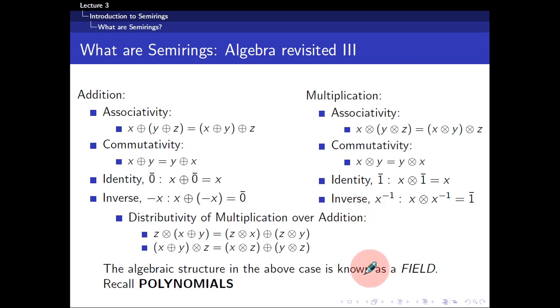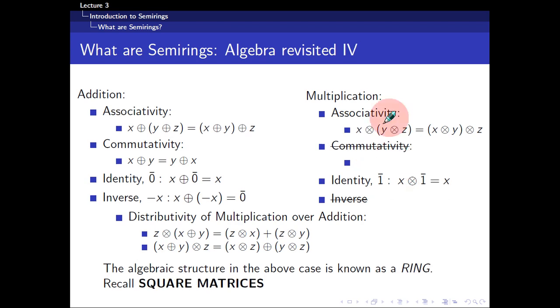So, then we move on and ask ourselves, what if we take away some of these properties? What if we take away some of these rules that we take for granted? So, for example, now we require that this new algebraic structure to not have commutativity and multiplicative inverse. So, what does it mean is that for the multiplication operator, the multiplication need not be commutative, need not commute anymore.